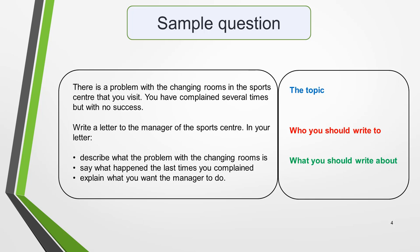The first sentence gives the topic of the question, which is a problem with the changing rooms in the sports centre. The second sentence tells you who you should write the letter to — in this case, the manager of the sports centre. The three bullet points tell you what you should write about: describe what the problem with the changing rooms is, say what happened last time you complained, and explain what you want the manager to do.